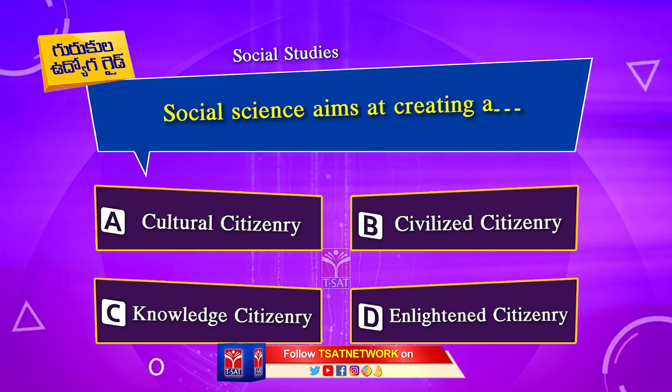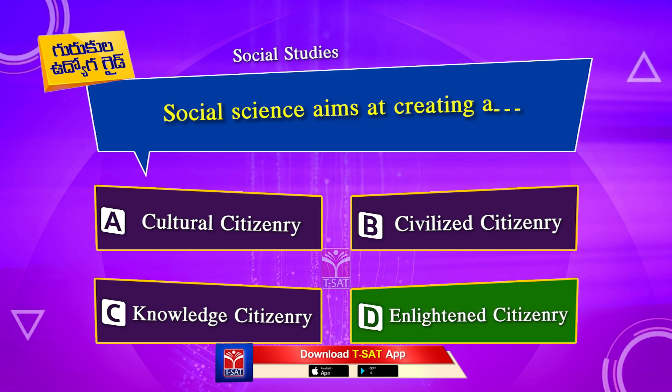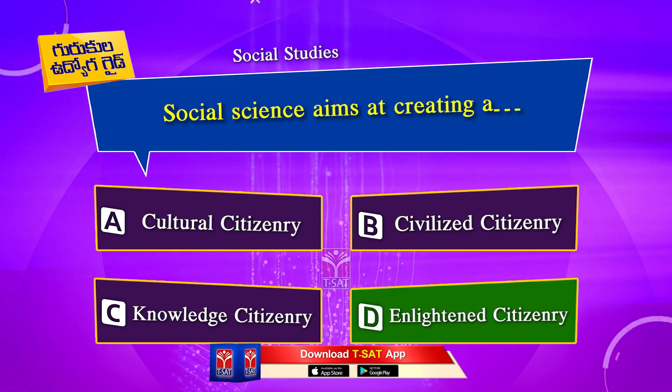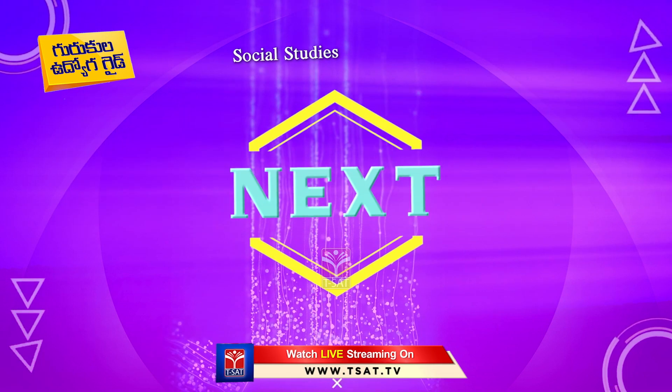The correct answer is Option D. Enlightened Citizenry. Next Question.